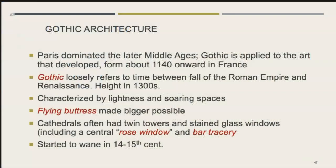Paris, France dominated the later Middle Ages, and Gothic is applied to art that developed from about 1140 onward in France. Gothic loosely refers to the time between the fall of the Roman Empire and the Renaissance hitting its height in about the 1300s. Gothic architecture is characterized by lightness, soaring spaces, and the flying buttress — an architectural technique that made building bigger and bigger churches possible. Cathedrals often had twin towers and a lot of stained glass windows, usually including a central rose window and bar tracery.